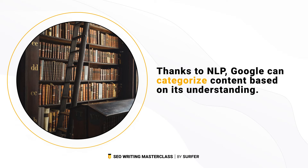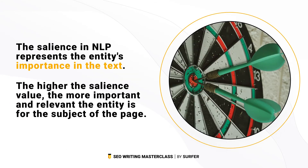Let's talk about salience. The salience in NLP represents the entity's importance in the text. This ranges from 0.0 to 1.0 — the higher the salience value, the more important and relevant the entity is for the subject of the page. For instance, the word Galaxy may be more important than iOS when talking about Samsung.